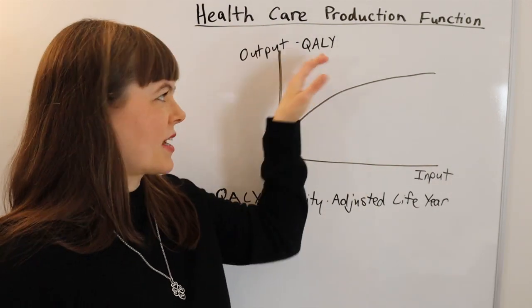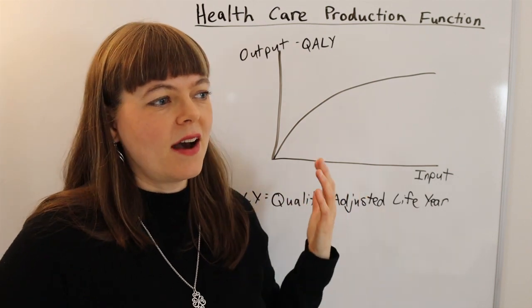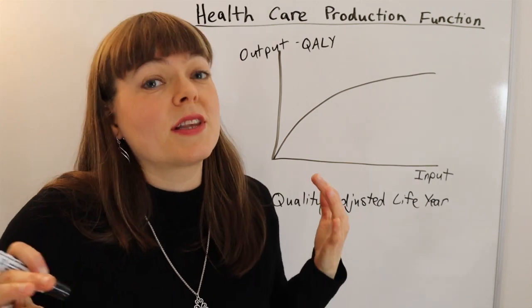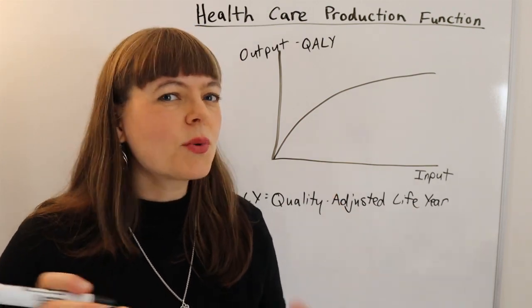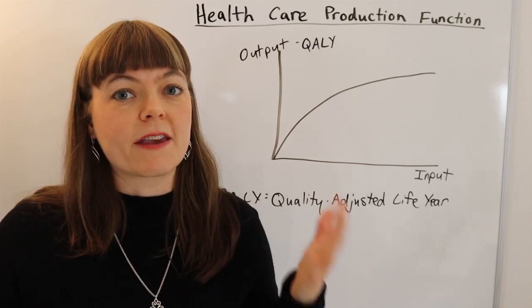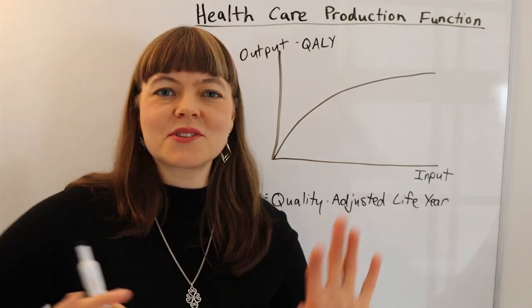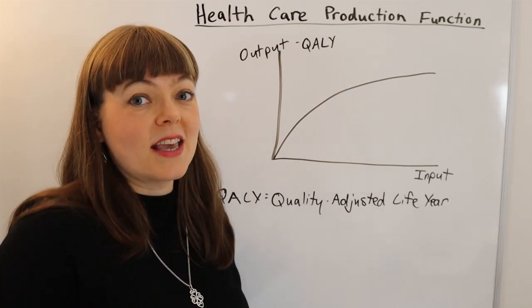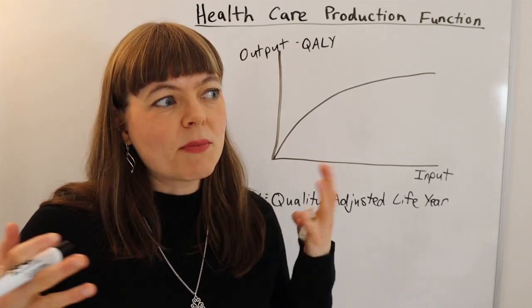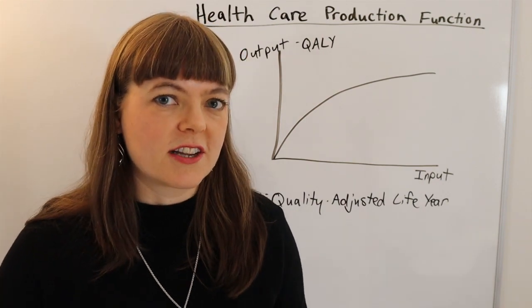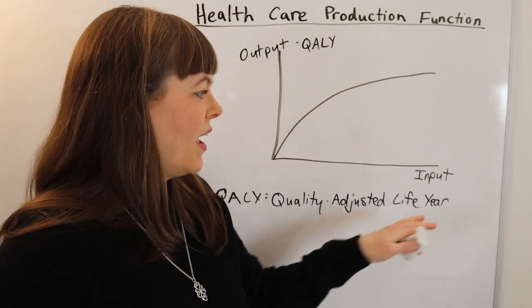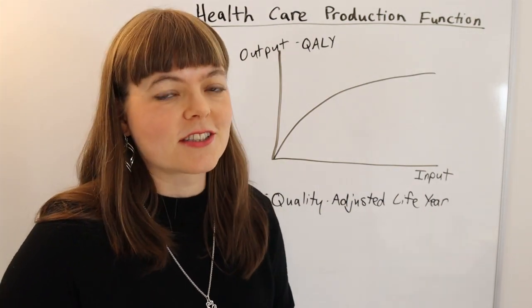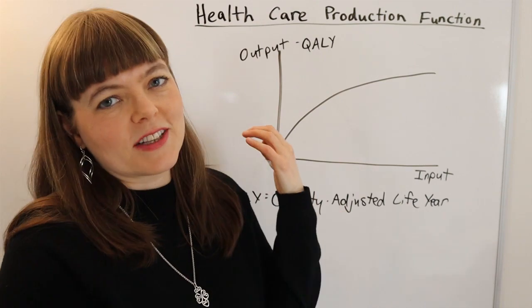Economists have some techniques for coming up with, if something reduces your pain by 10% and you are really, really in pain, how do we translate that into something akin to life years? I won't talk in this video about the techniques for doing that, but just know that quality adjusted life years is a measure of how much health benefit you get from any technology. The simplest form of input is going to be dollars invested in the healthcare system or dollars invested in health.